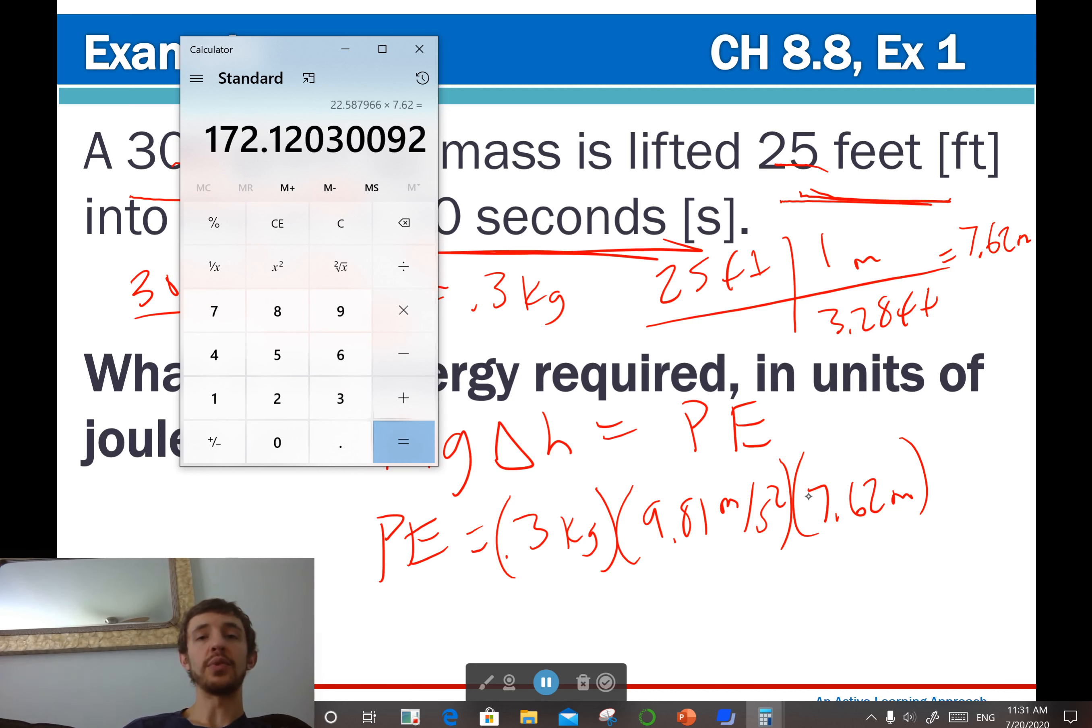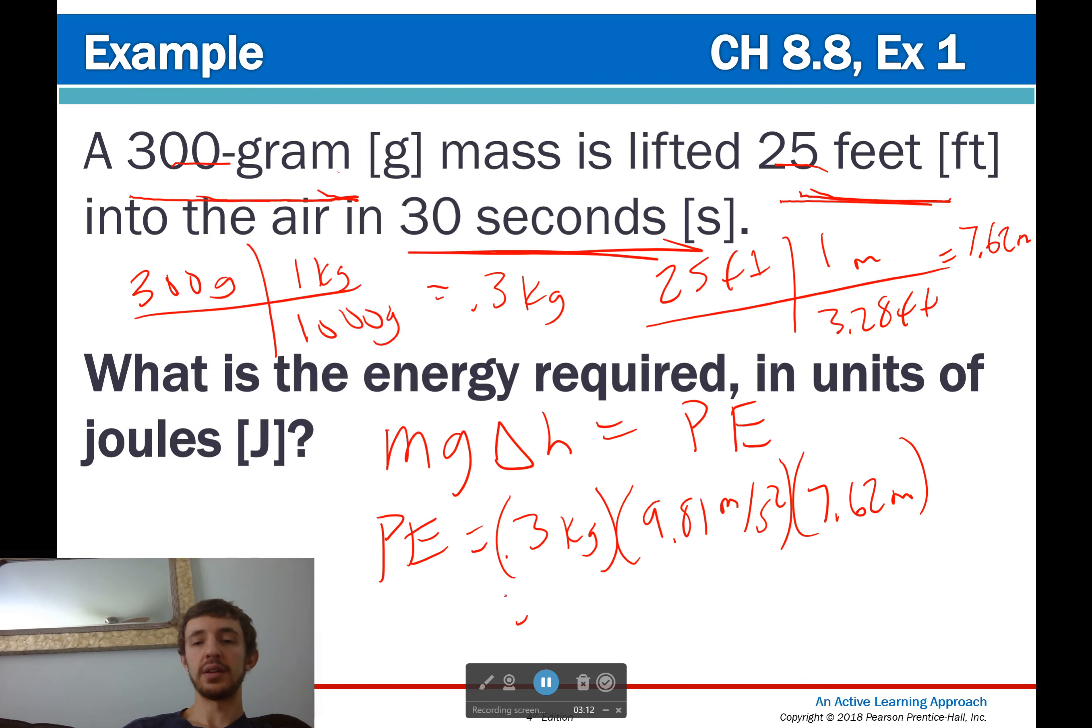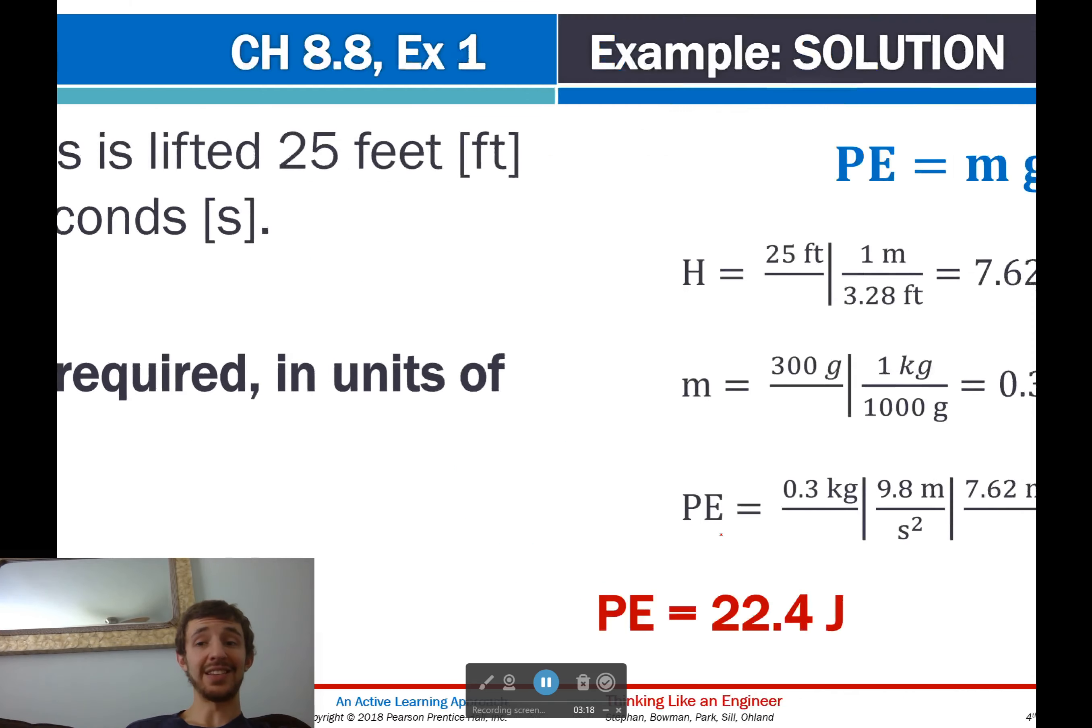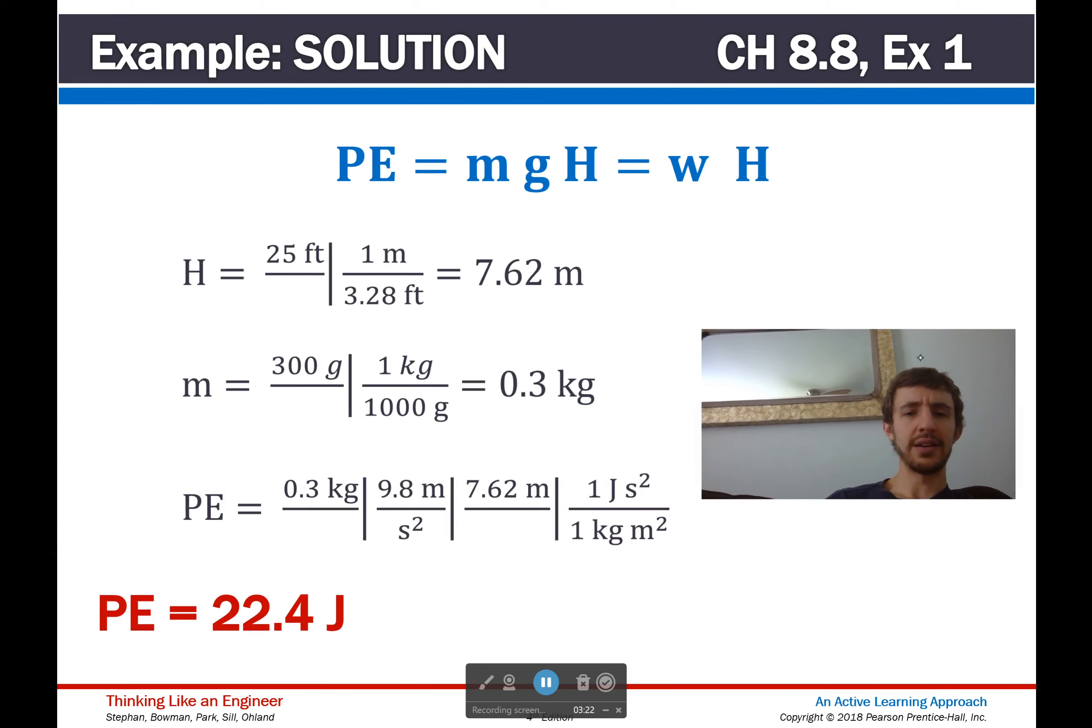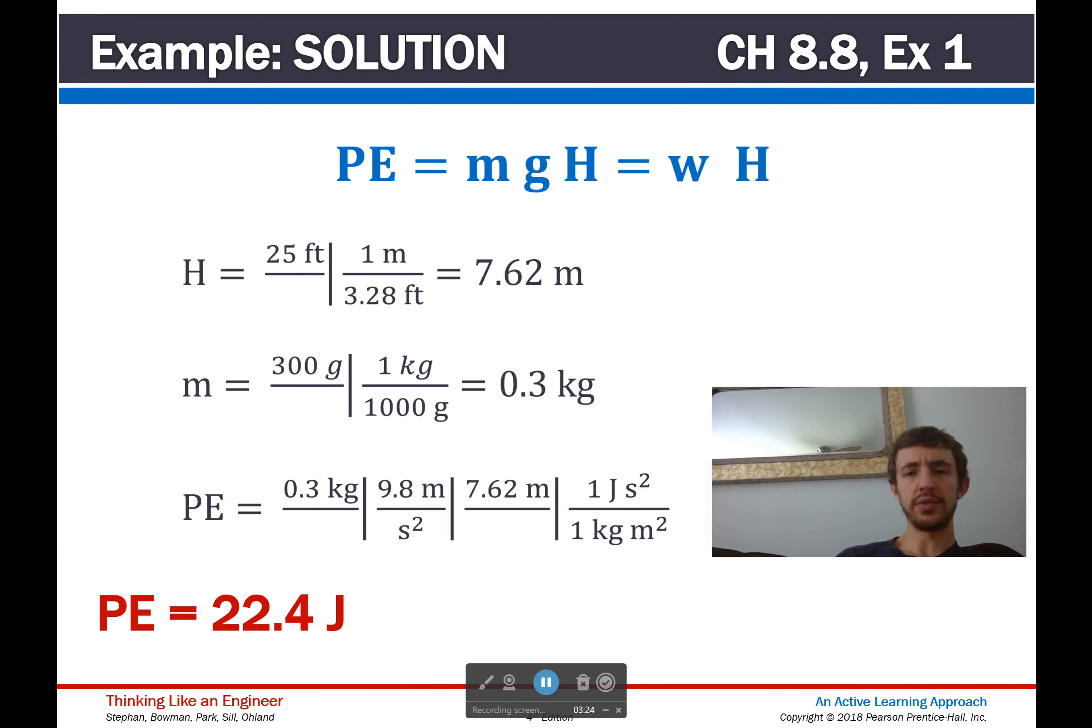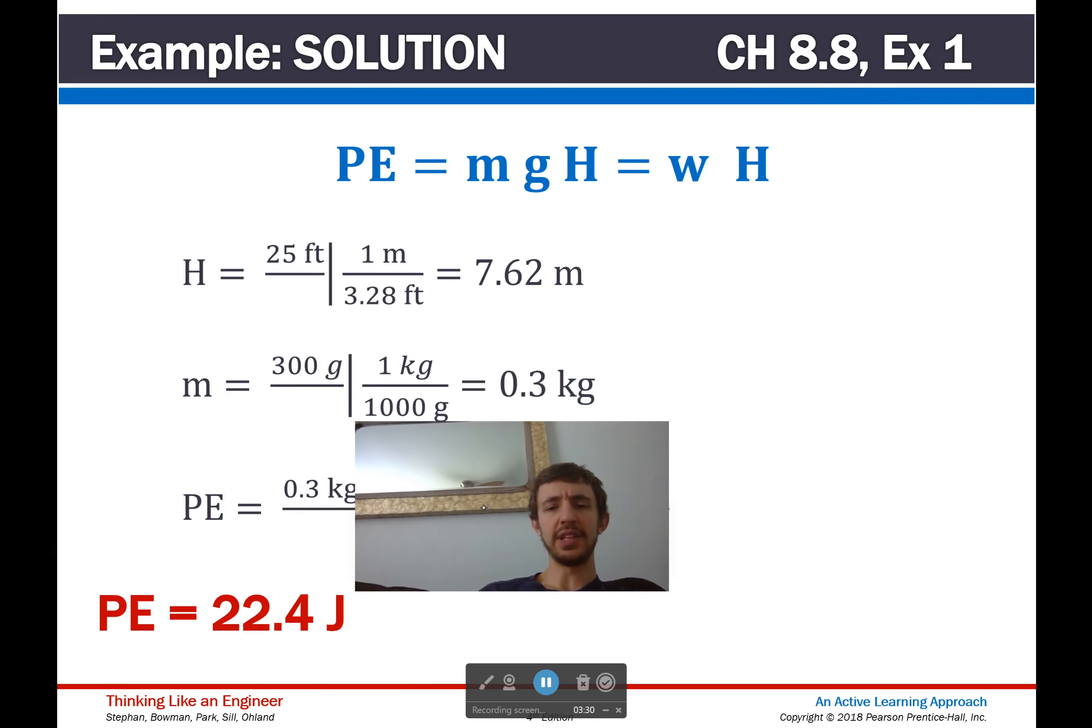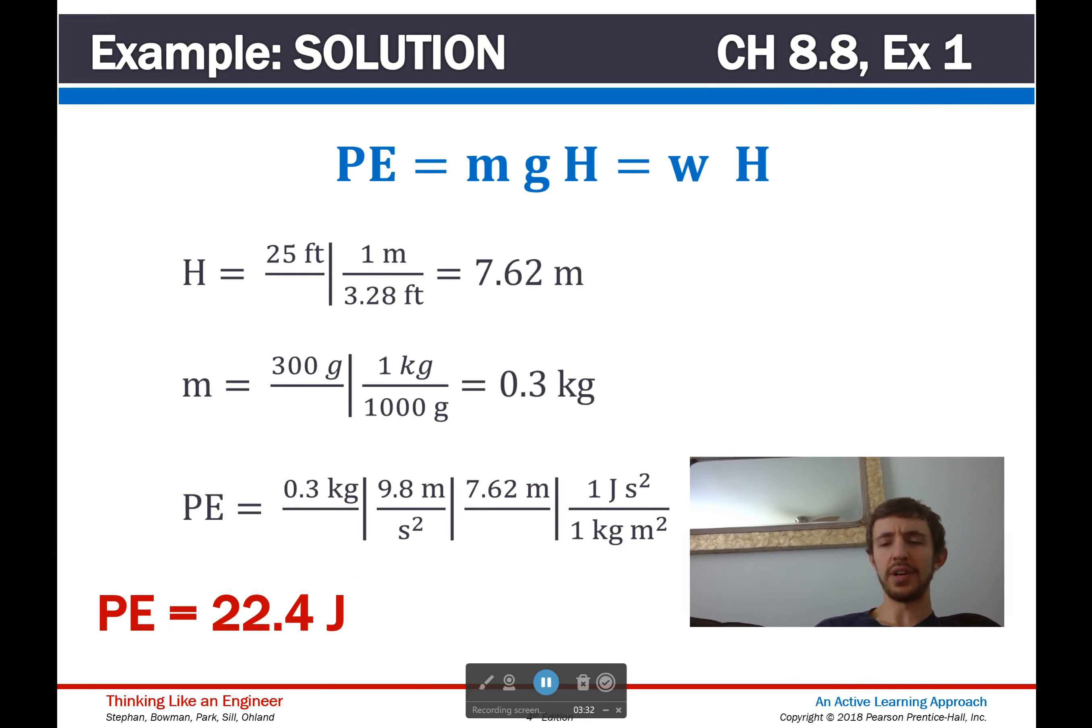Let's use my calculator and see what it gives me. 0.3 times 9.81 times 7.62. 172.1 looks like. So, 172.1 joules. And if I hit the next key, let's see. I'm in the way. They said 22.4 joules. What went wrong here? 0.3, 9.8, 7.62. I'm actually inclined to believe them, which means I plugged something terribly wrong into my calculator.